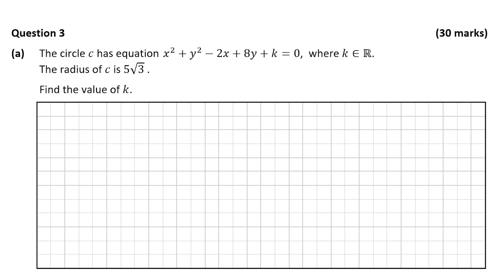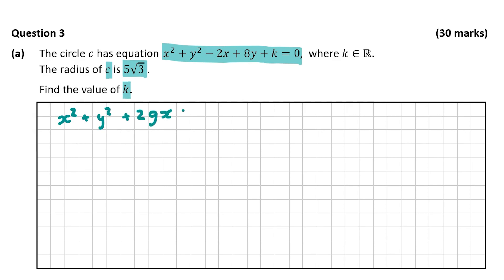We're told that the circle C has the equation x squared plus y squared minus 2x plus 8y plus k is equal to 0, where k is a real number and that the radius of C is 5 root 3. We're asked to find the value of k. We can see that this equation is in the form x squared plus y squared plus 2gx plus 2fy plus C is equal to 0.